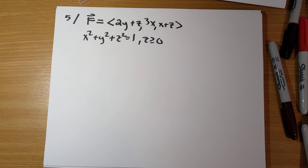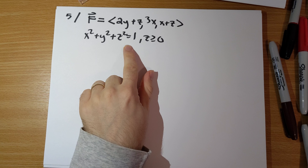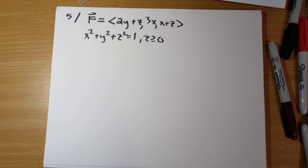On number five, we're asked to verify Stokes' theorem for this vector field and the upper unit hemisphere, x squared plus y squared plus z squared equals 1, z greater than or equal to 0, oriented with outward-pointing normal vectors.